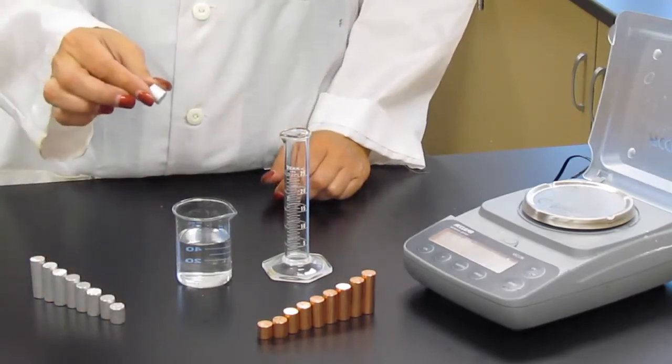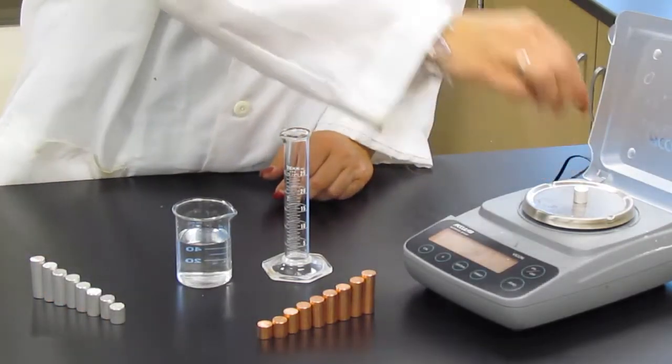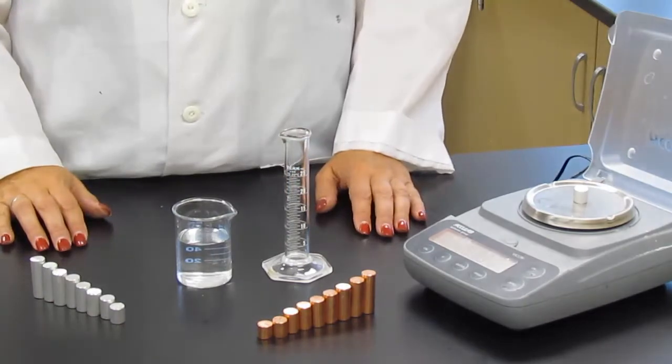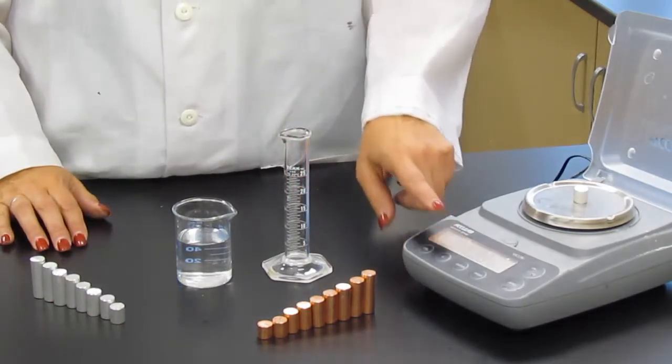First thing you're going to do is find the mass of one of your cylinders. Make sure you take a reading to the correct number of sig figs.